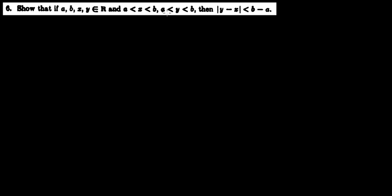Show that if A, B, X, and Y are elements of the real numbers, and A is strictly less than X, and X is strictly less than B, and A is strictly less than Y, and Y is strictly less than B,